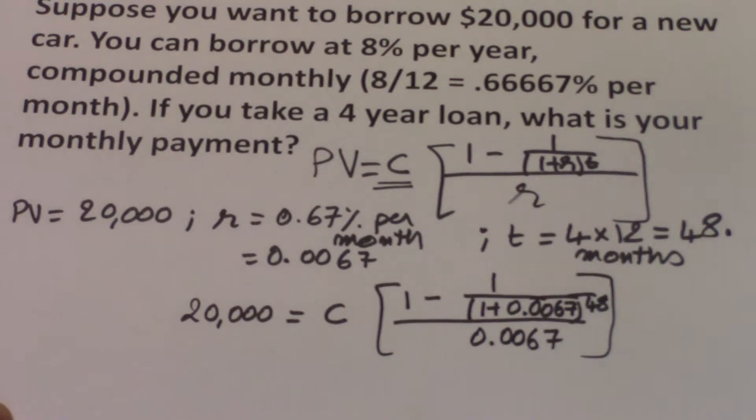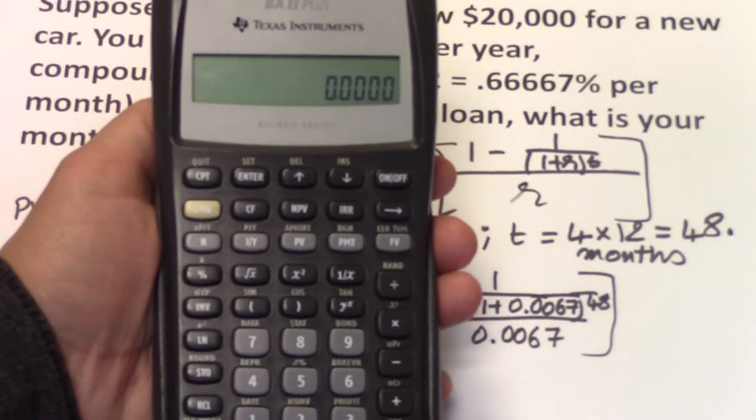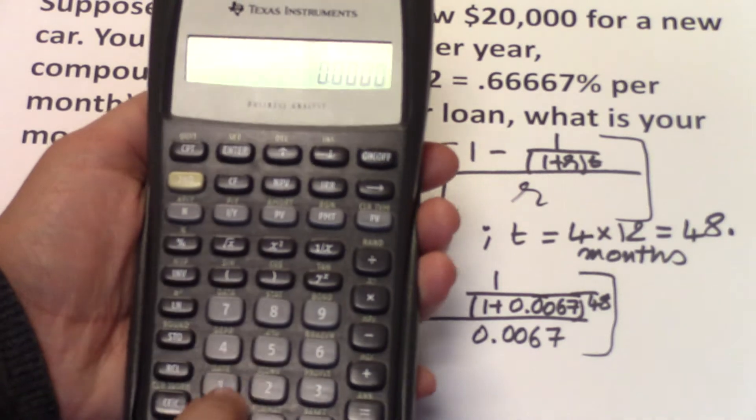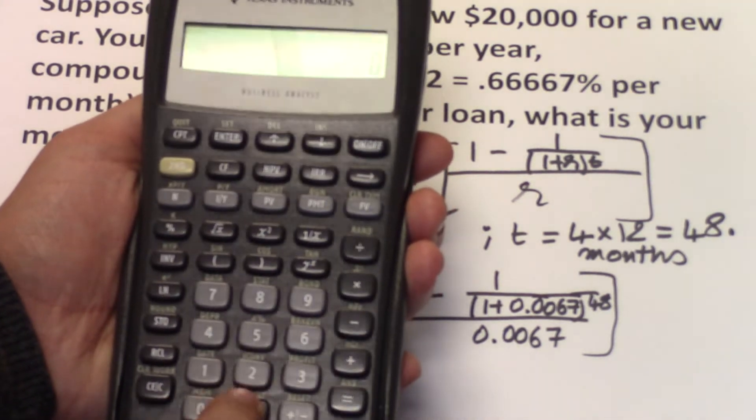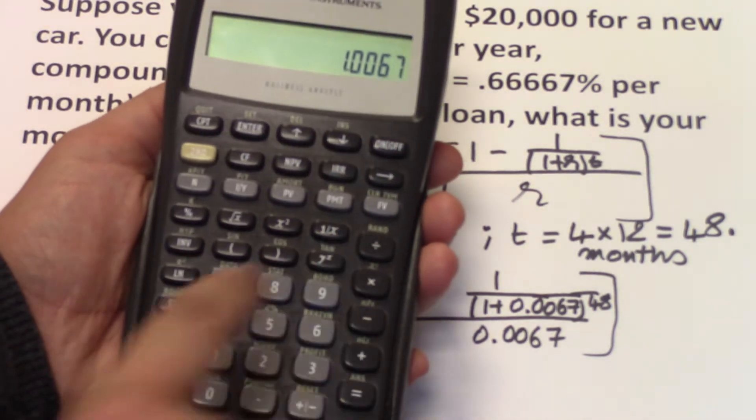The easiest way to do this is to determine the number inside the brackets first, and then look for the missing value, which is C. Using the regular calculator, you do 1 plus 0.0067 to the power of 48.